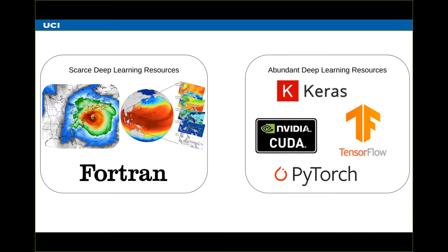Now that we've introduced deep learning and said why it's important, we can begin to ask: if we want to implement a deep learning model, where might those libraries be available? There's a whole bunch of somewhat complicated math and information to keep track of, and these libraries actually provide all of that for you, making it very easy to quickly build one of these systems and train it with very little code on the user side. There are libraries like TensorFlow and PyTorch, maintained by Google and Facebook — companies devote a lot of resources to maintaining these libraries.